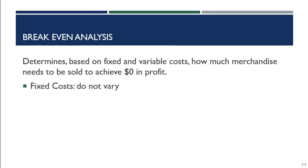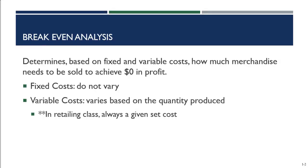We'll walk through this just like we did with markup and markup percentage. First, let's understand fixed costs and variable costs. Fixed costs do not vary based on the quantity of merchandise we produce — whether we produce one t-shirt, a hundred, or a million, fixed costs stay the same. This includes the cost of the building, equipment, and other fixed costs.